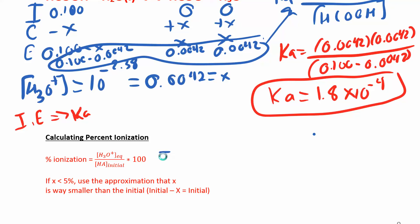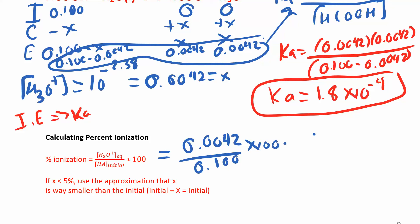For this problem, percent ionization equals 0.0042 divided by 0.1 times 100, which gives us 4.2%. So only 4.2% ionized — that's not very much. That x is really small compared to the initial 0.1 M. In the next problem we'll use this percent ionization to check whether we can make an approximation: that x is so small compared to our initial concentration that it's essentially negligible.